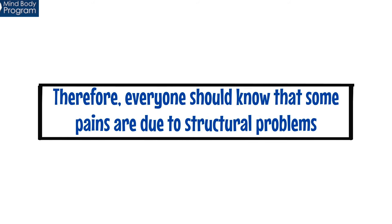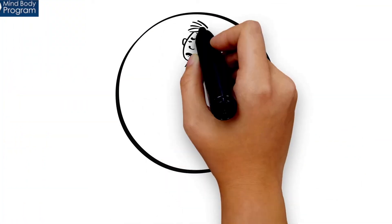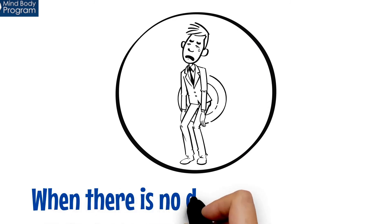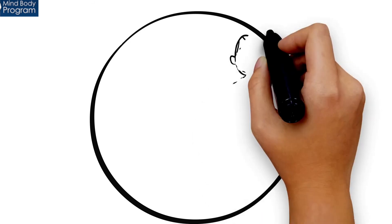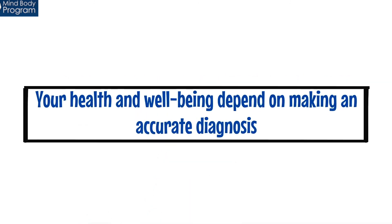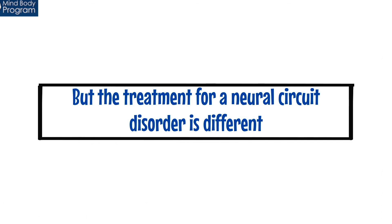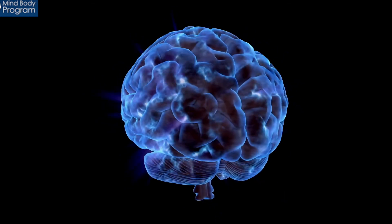Everyone should know that some pains are due to structural problems, and other pains are due to neural circuits in the brain. Chronic pain is often caused by neural circuits when there is no damage in the body — this is more common than you might think. A good team consisting of you and your doctor can be good detectives and figure this out. Your health and well-being depend on making an accurate diagnosis. The treatment for a structural disorder is medical treatment, but the treatment for a neural circuit disorder is different — it is to reprogram your brain to unlearn the pain.